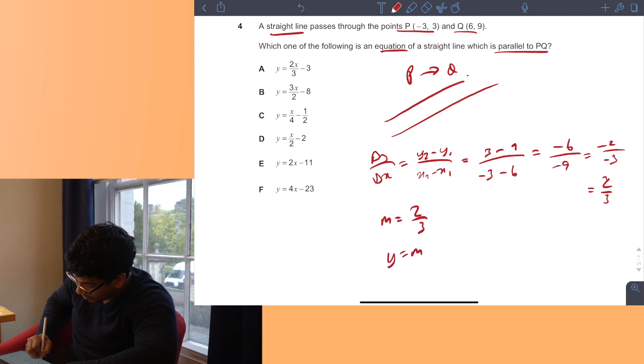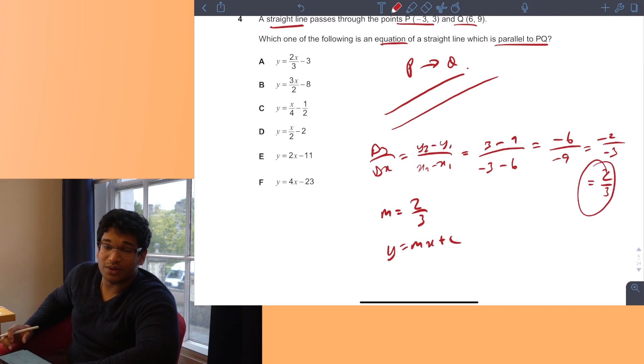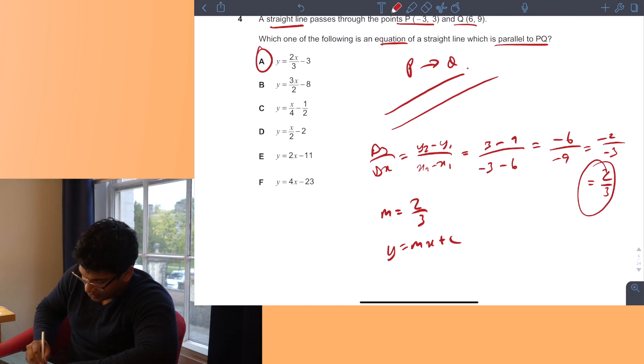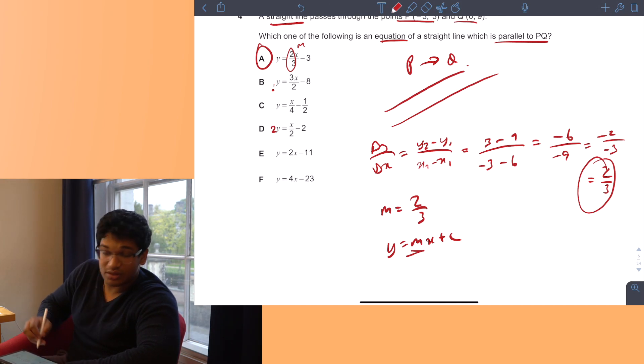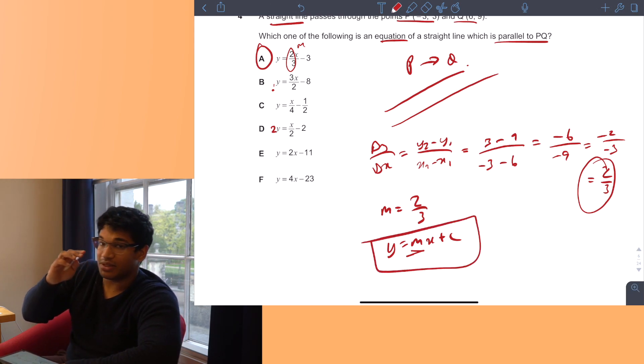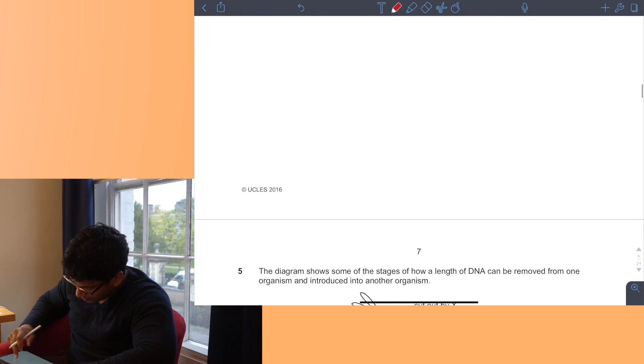That's minus 6 over minus 9 equals minus 2 over minus 3. The minuses cancel, equals 2 over 3. I'm not skipping steps here because we have to be really careful with the math in the BMAT. So the gradient M equals 2 over 3. The equation is Y equals MX plus C. The other line will have the same gradient but a different number, so the answer is B. None of the others have 2 over 3 as a gradient. If it's a single Y, it's always the number in front of X which gives the gradient.